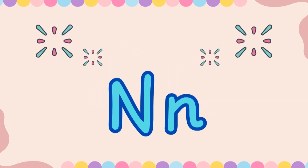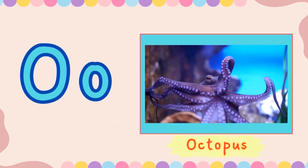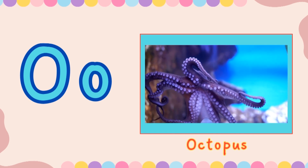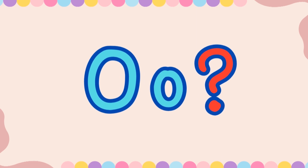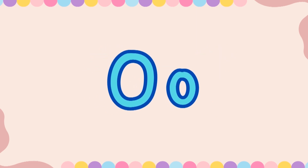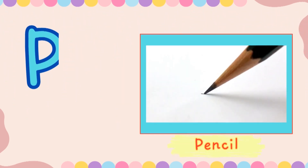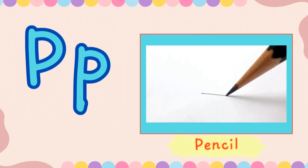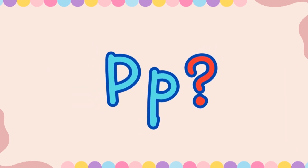N! Very good! This is letter O. And O is for Octopus. What letter is this? O! Very good! This is letter P. And P is for Pencil. What letter is this?